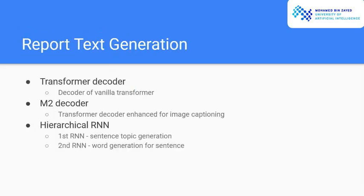Now, to generate the reports, we use three different decoding methods. First one is transformer decoder. We just use the decoder of a vanilla transformer, vanilla NLP transformer. Second method is M2 decoder, which is a transformer decoder enhanced for image captioning. Last, the third method is the hierarchical RNN, which I already talked about in the literature review part.